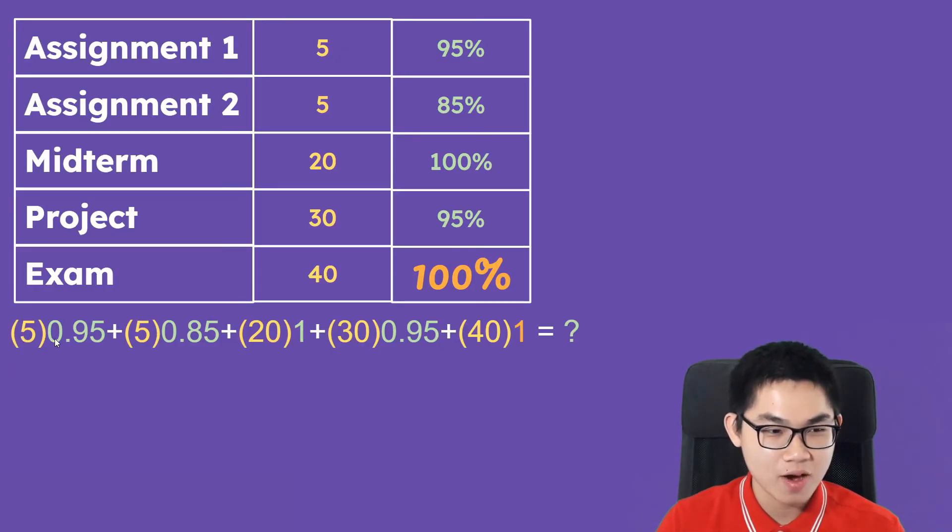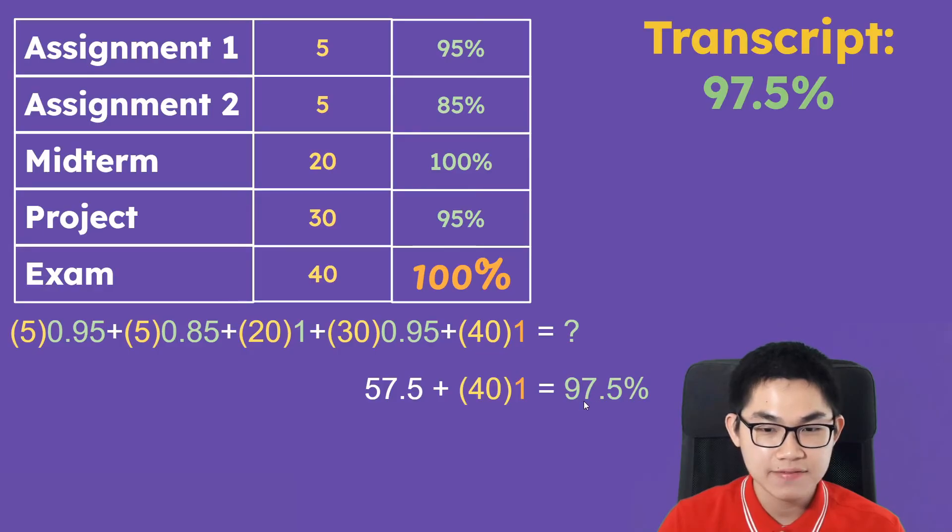So it's the same thing. You take all of this, plus just like before, and here it is 40 times 100%, or 40 times 1. And so when you plug this into your calculator, you get 97.5%. So what this means is that 97.5% will appear on your transcript.